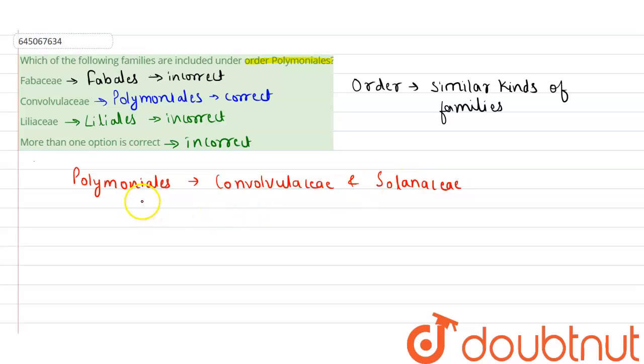Such families are considered under order Polymoniales. So the answer of the above question will be option two. I hope you understood. Thank you very much.